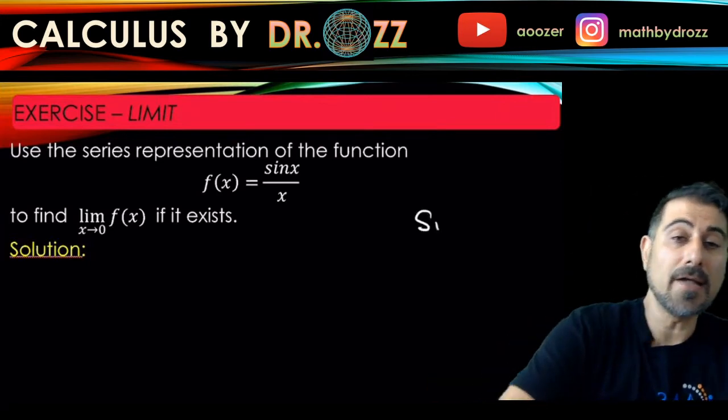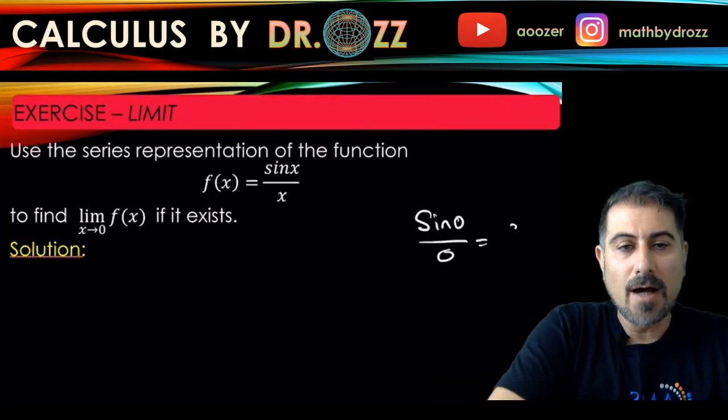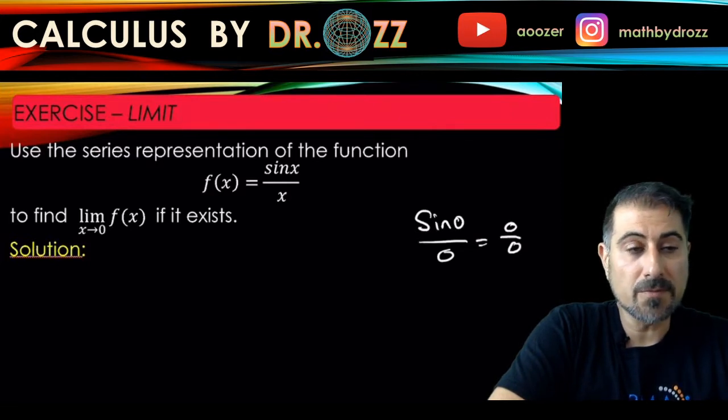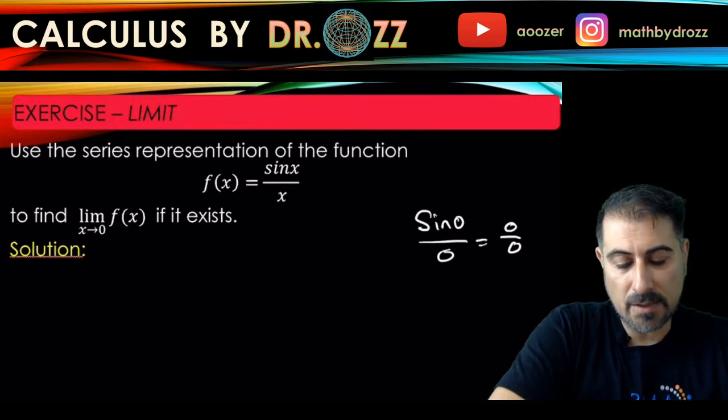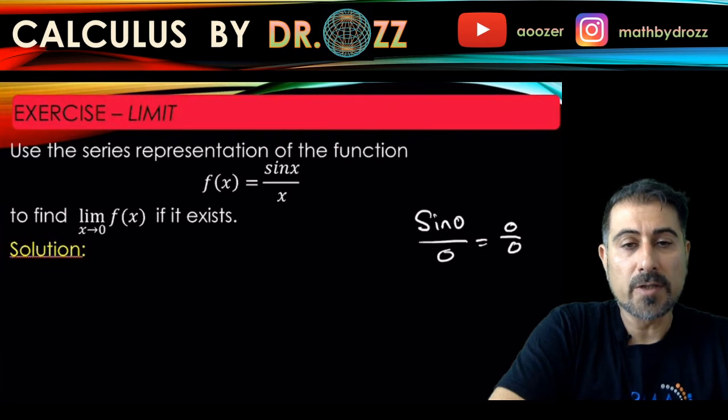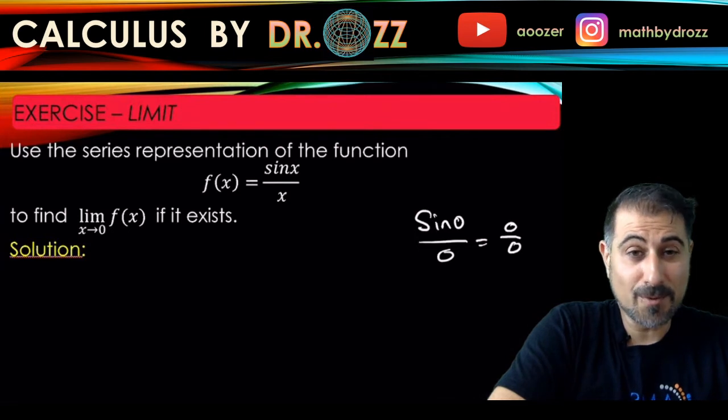When we have this indeterminate form we can either use the table of sample values by using your calculator. We take sample values around 0 and then see what the corresponding function values approach, or we can use L'Hôpital's rule to take care of that.